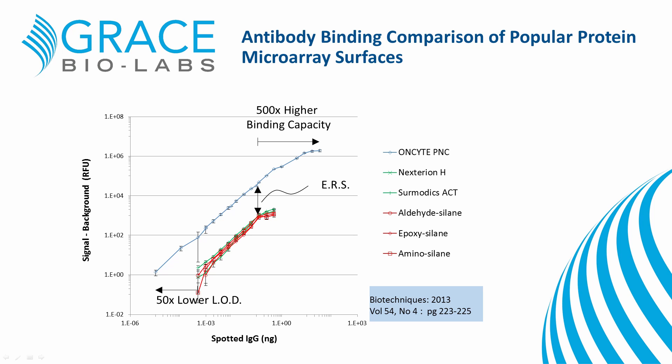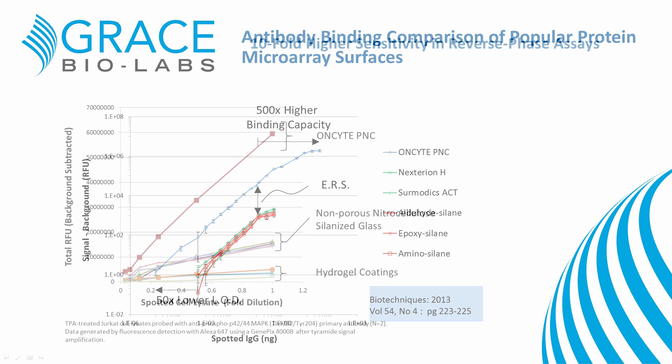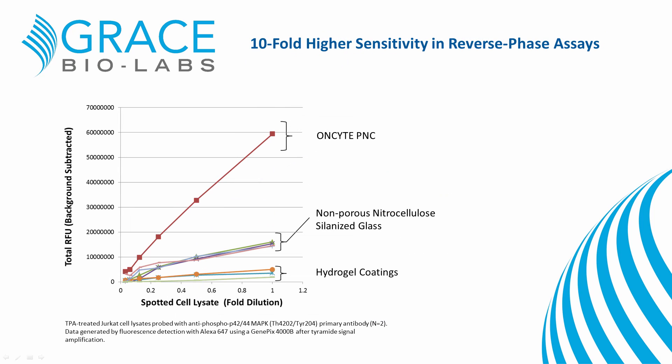All of these performance advantages make on-site PNC ideal for many protein array applications where binding sensitivity and specificity are desired. The high binding capacity of on-site PNC translates to a significantly higher sensitivity for reverse-phase protein arrays. When compared to other binding surfaces, on-site PNC provides 10 times the sensitivity. This sensitivity is critical for many researchers who routinely use minute tissue lysates from tumors and are looking for subtle shifts in protein phosphorylation states.